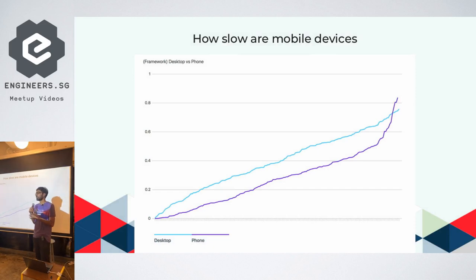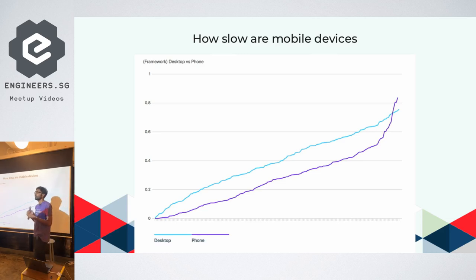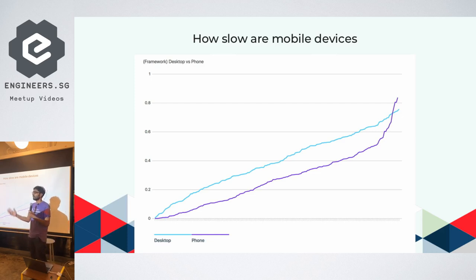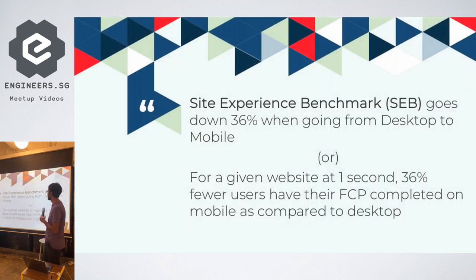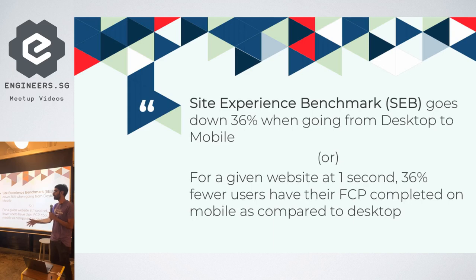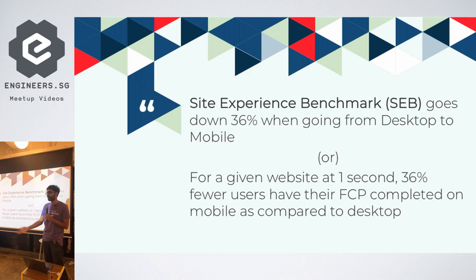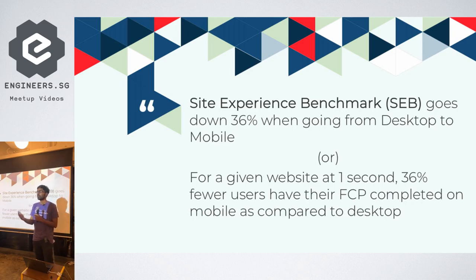Everyone knows sites load more slowly on mobile than desktop, but with this data you can actually quantify it. We took 50 websites and computed the SEB metric — the fraction of users with First Contentful Paint under one second — and found that desktop consistently has a higher SEB than mobile. Specifically, SEB drops by 36% going from desktop to mobile, meaning 36% fewer users complete their First Contentful Paint within one second on mobile.